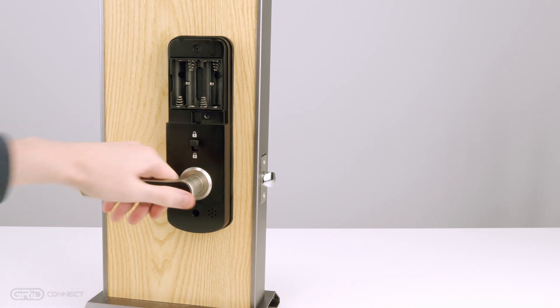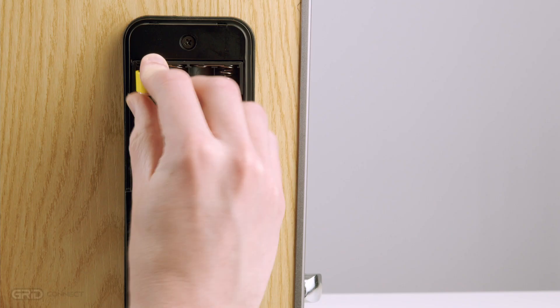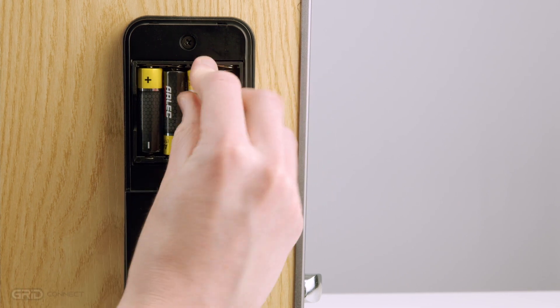Test that the indoor handle will retract the latch. Install four AA batteries and replace the back cover.